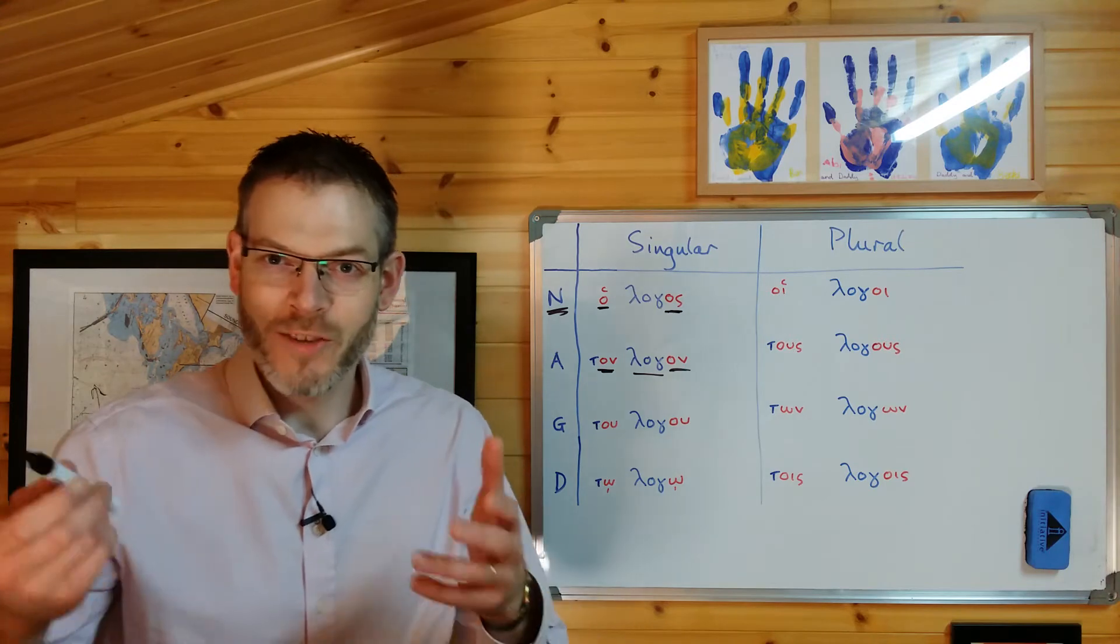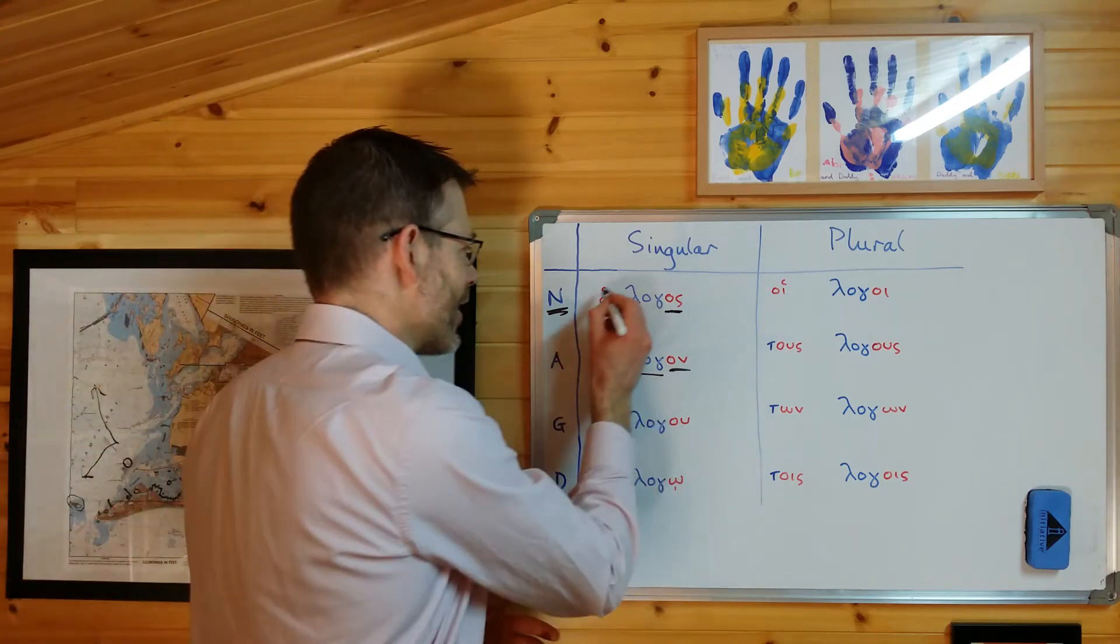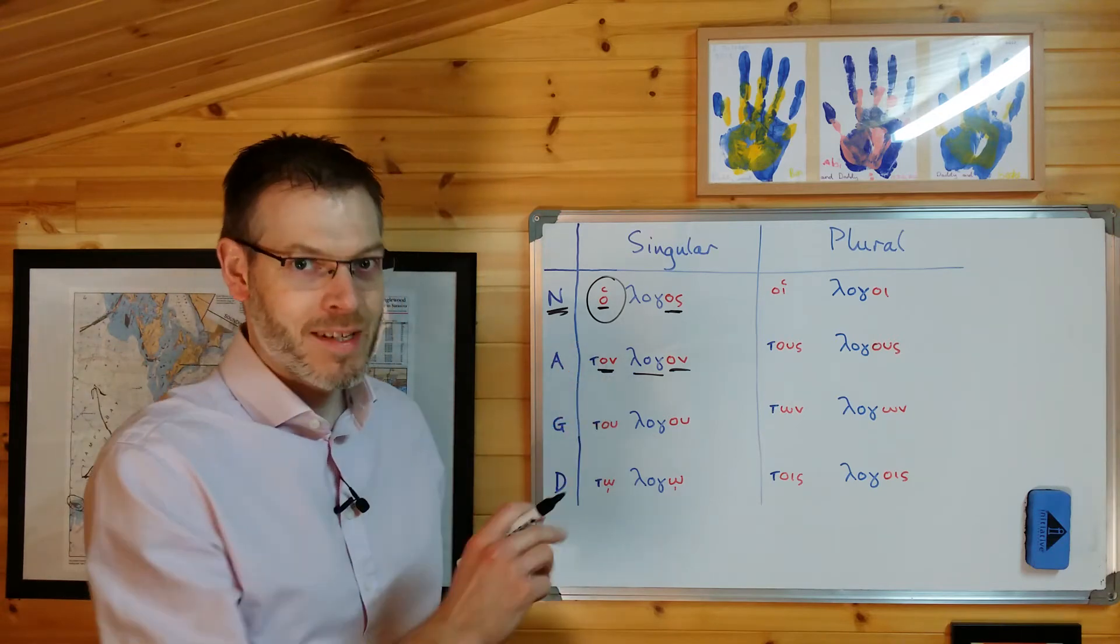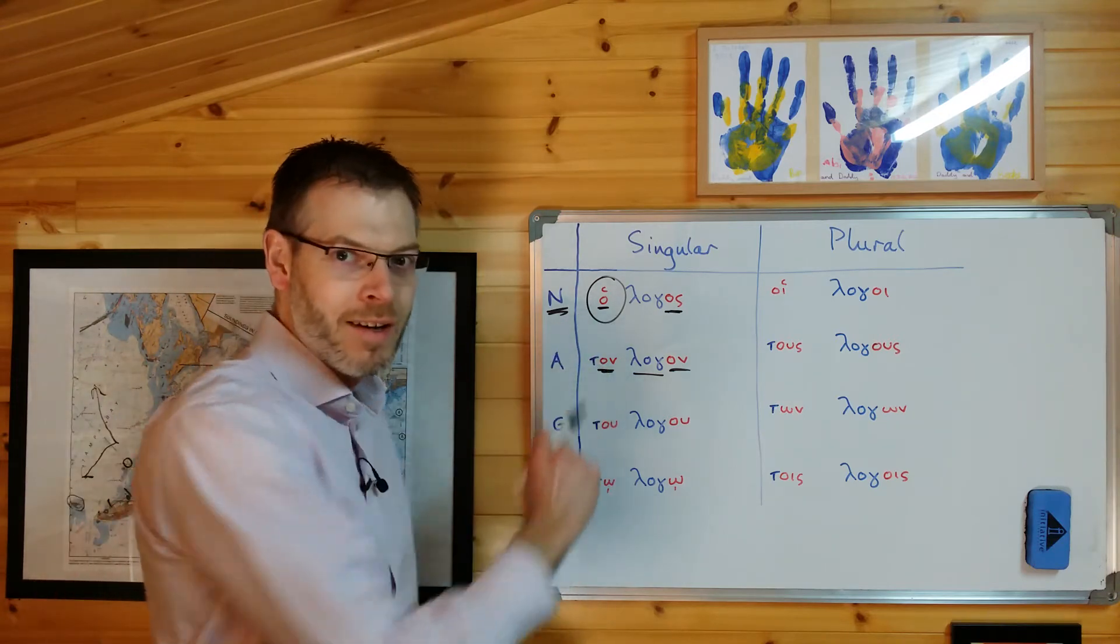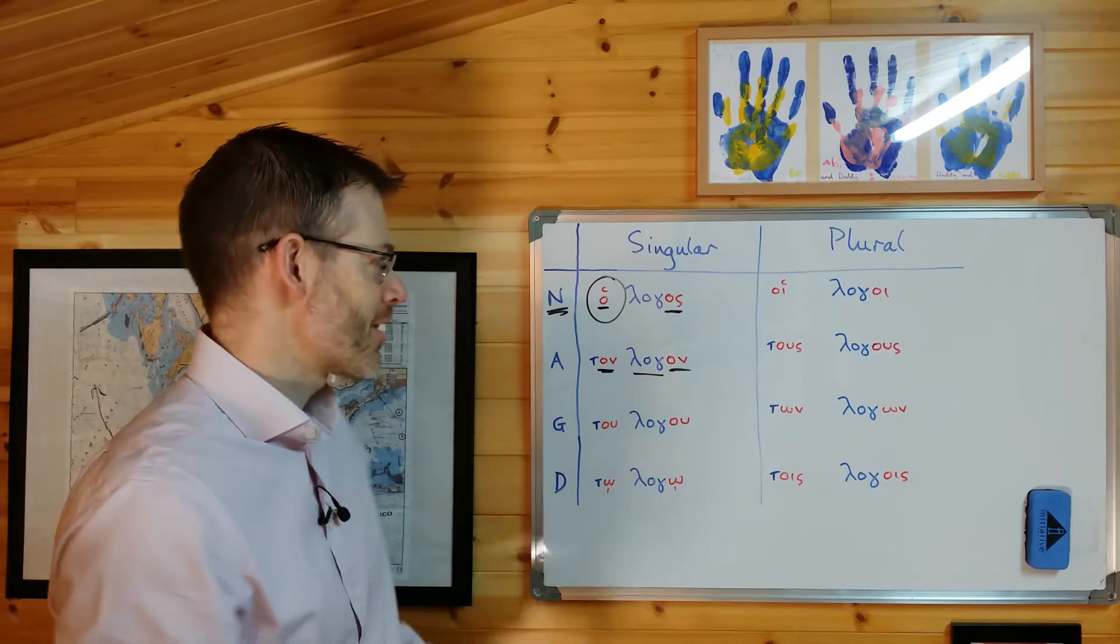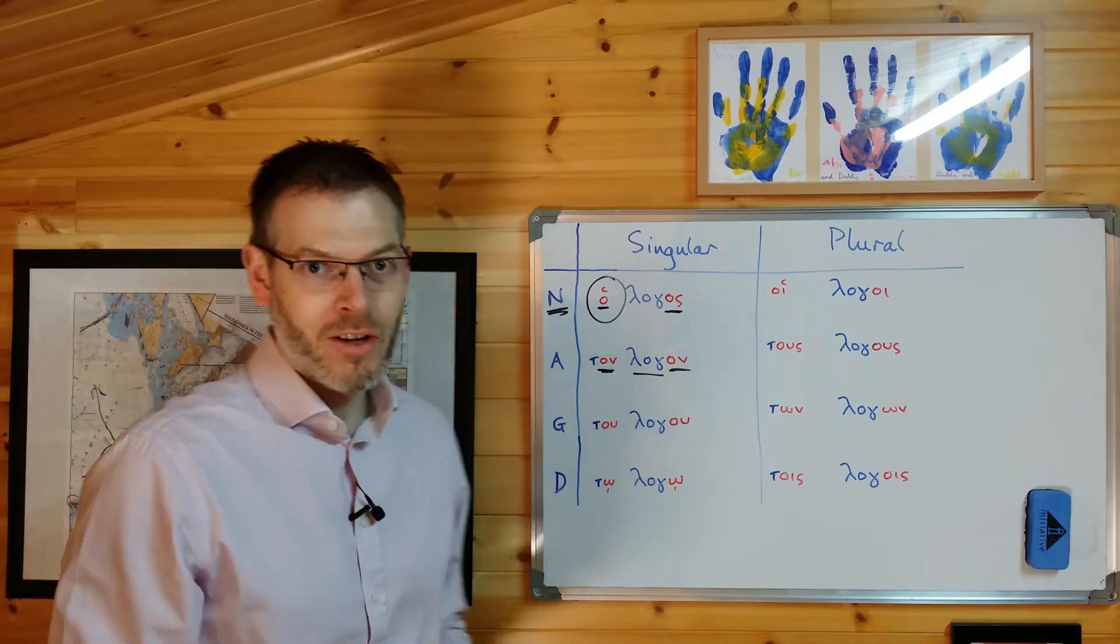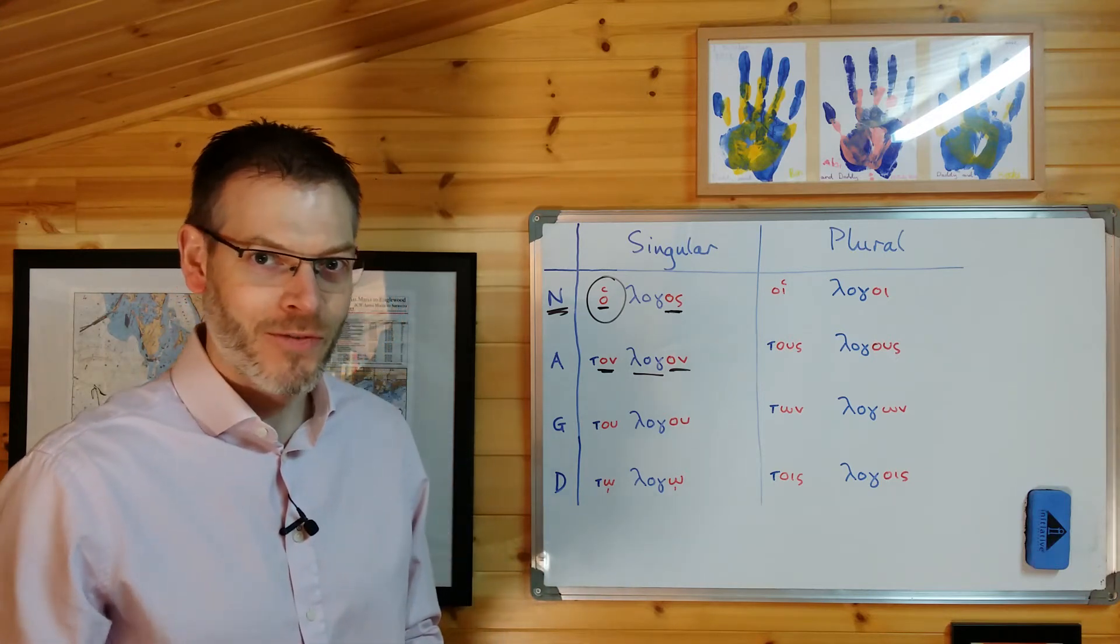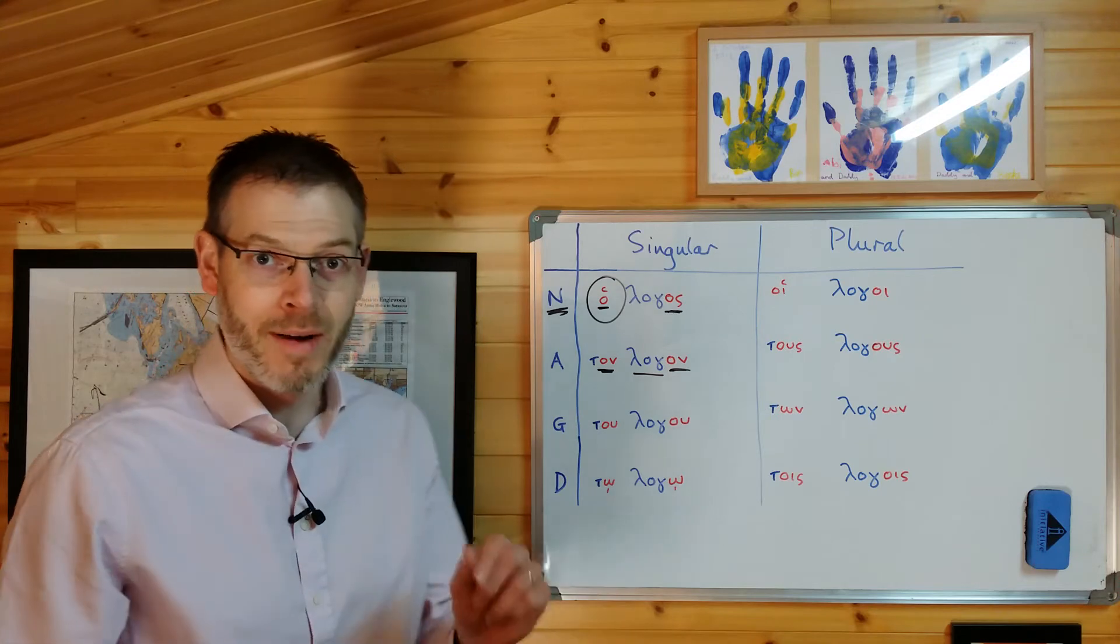Now, this is great because it means once you've learned one, you've learned the other, that you've only got to learn this as a little bit different. It's not hos. That's actually a different word in Greek. It's ho. But you'll learn that in no time at all, because that's about the most common word you'll ever come across in Greek. So learning logos, logon, logoo, logoo, logoi, logoos, logon, logois will also give you the article with about two minutes extra thought. That's the first thing, just to learn the form.